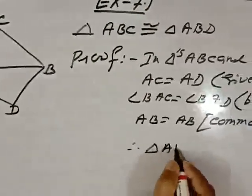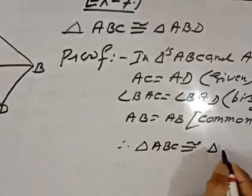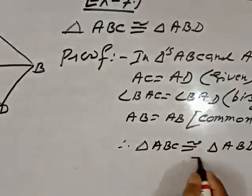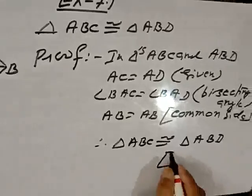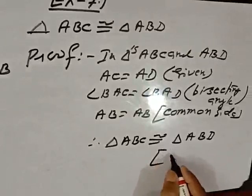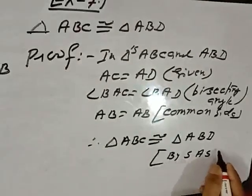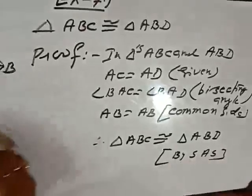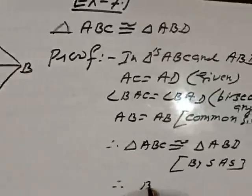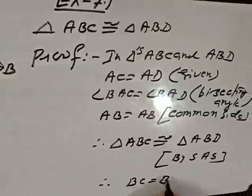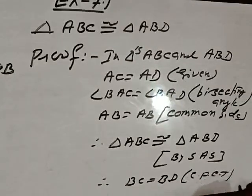Therefore, triangle ABC is congruent to triangle ABD. What rule I have told? Two sides equal to corresponding two sides and angle included by them is also equal, that is by side angle side rule. And if the two triangles is congruent, then what happens? Therefore, BC is equal to BD by CPCT, congruent parts of congruent triangles.